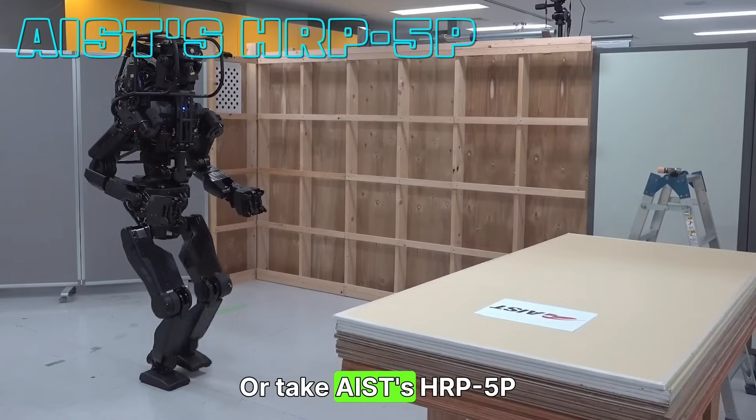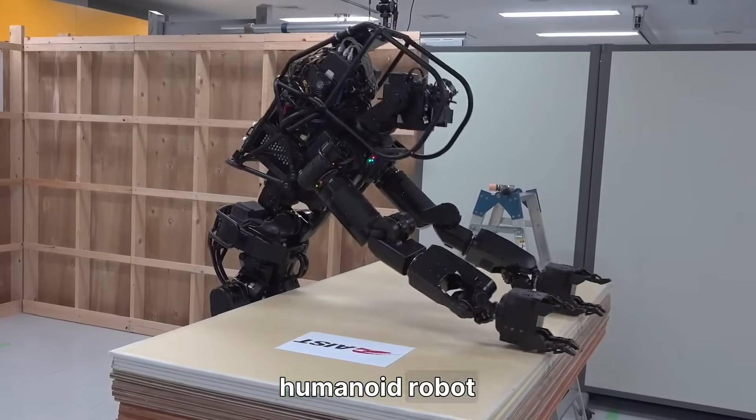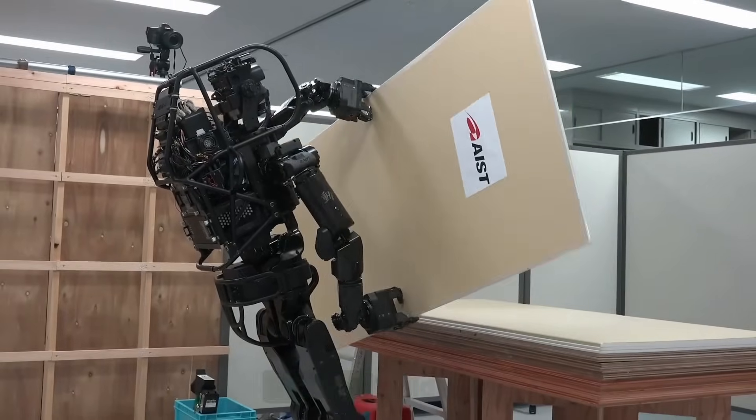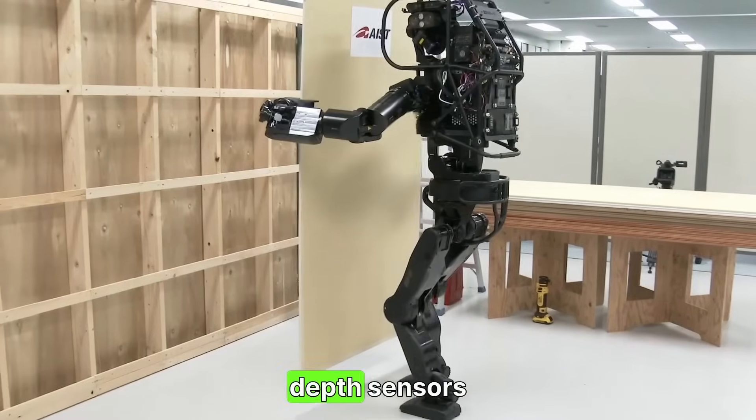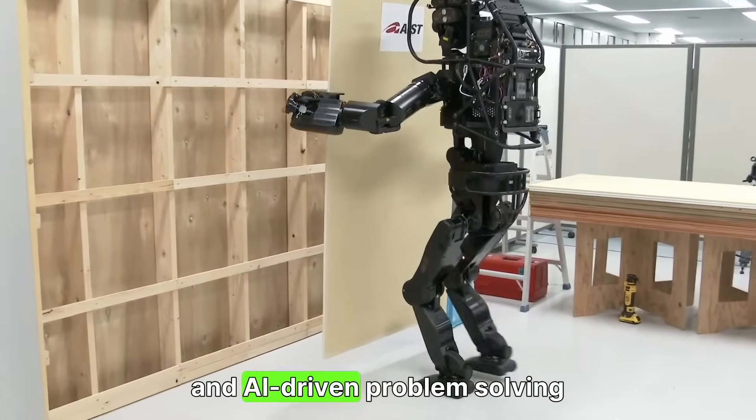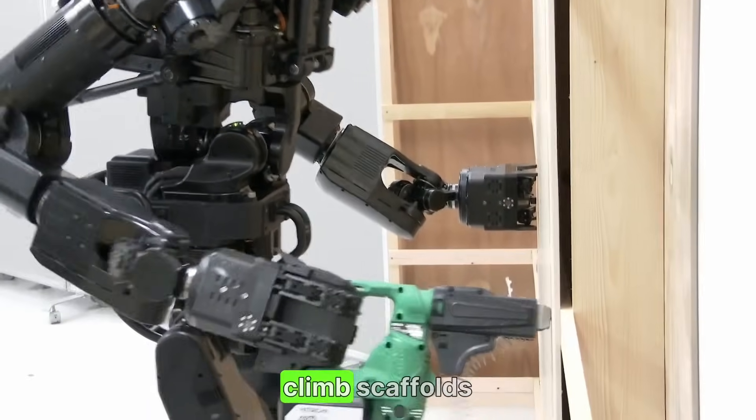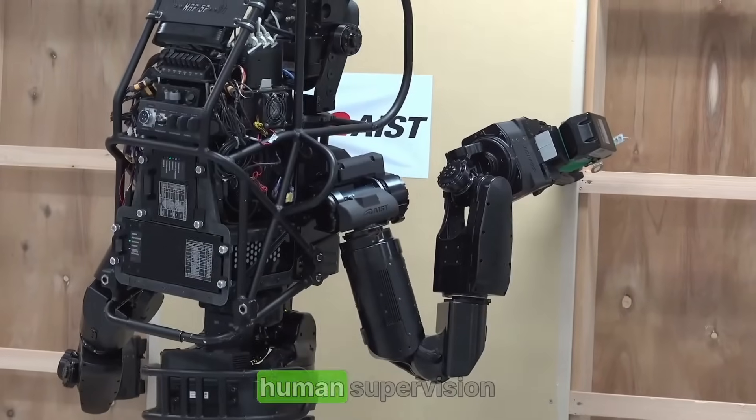Or take AIST's HRP-5P, a fully autonomous humanoid robot capable of performing construction tasks. That's right, robots building buildings. With precise motor control, depth sensors, and AI-driven problem solving, HRP-5P can handle tools, climb scaffolds, and work in hazardous zones without human supervision.